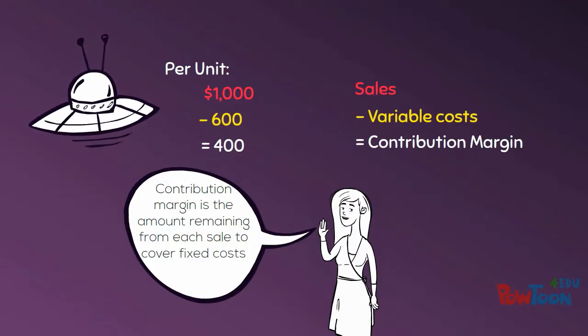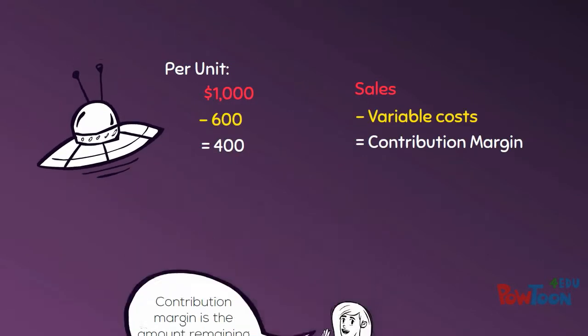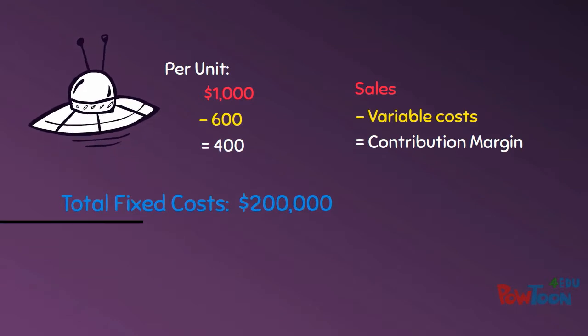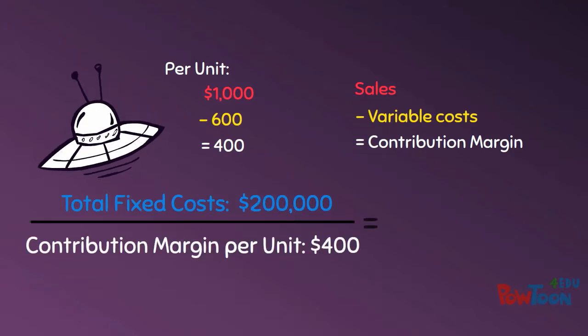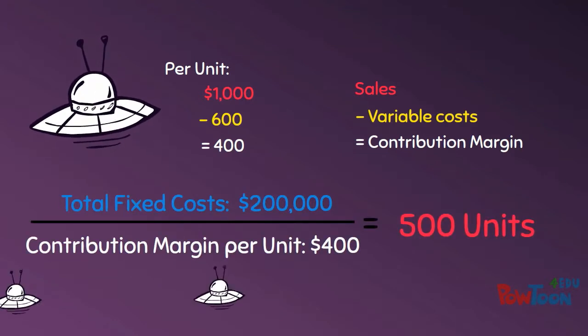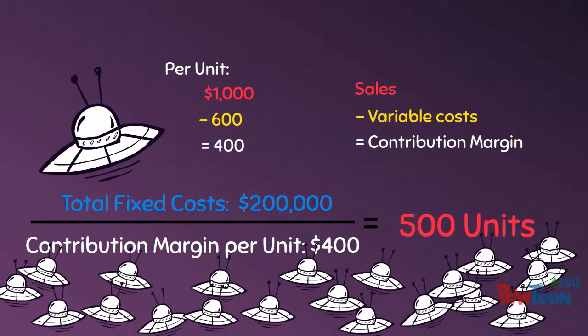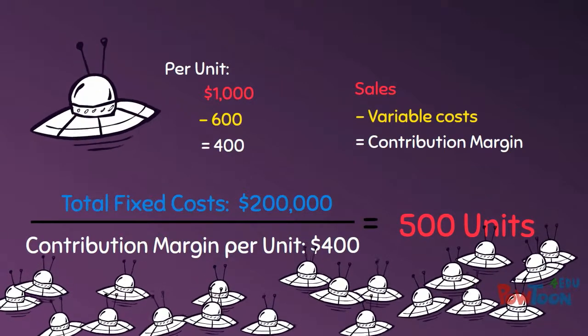Now that we know our contribution margin, we can divide our total fixed costs by our contribution margin per unit to determine that we need to sell 500 spaceships to break even.